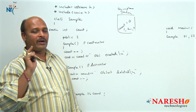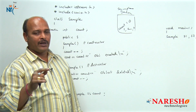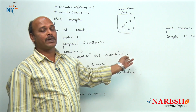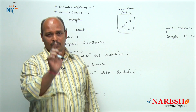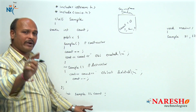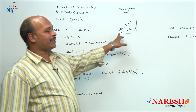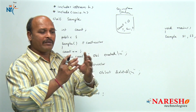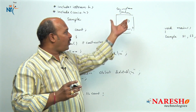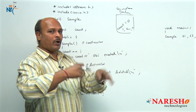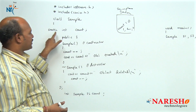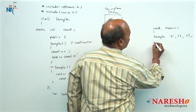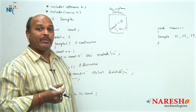Whenever a data member is declared static, it becomes a class member. Only one copy is created and it is automatically initialized with 0, but it is accessed by all the objects. That is why whenever you want to share one data member across all objects of a class, use static data members. This is how to work with static data members.